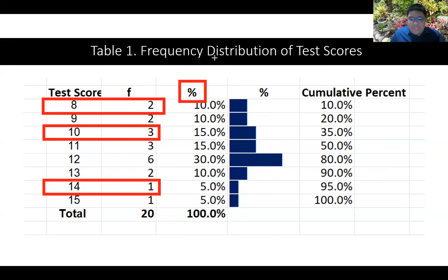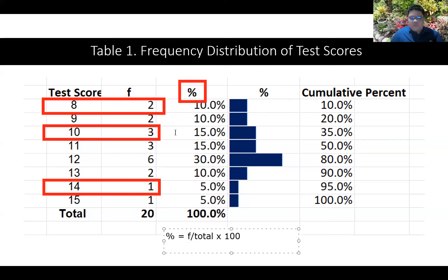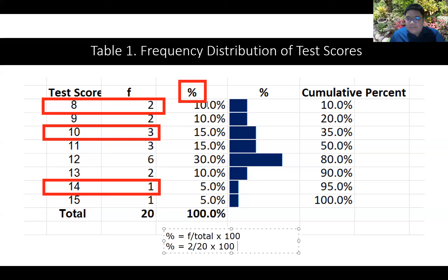This listing is actually of 20 students, so our total is 20. For the percentage, you simply solve it by dividing the frequency by the total, then multiplying by 100. For example, 2 divided by 20 times 100 gives us 10 percent.